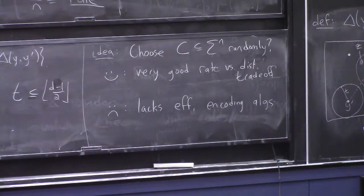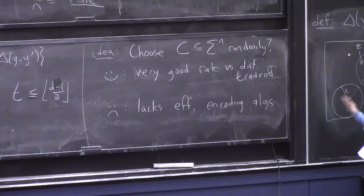For example, if k is like 100 and q is 2, so there's 2 to the 100 code words, you could imagine in principle just picking them randomly to be a subset of, I don't know, all strings of length 500, but how are you going to store them? How are you going to figure out a mapping that maps a message to a code word and so forth?